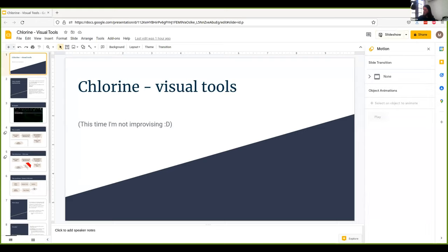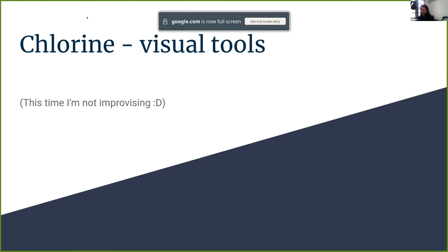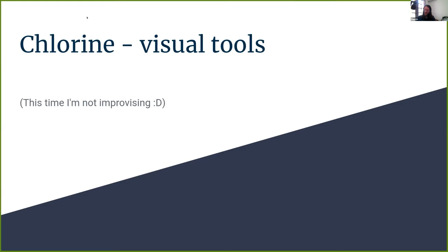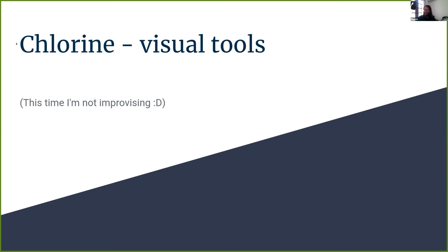So this time I'm not improvising. I am doing a slideshow because otherwise things would be weird, because I'm doing some work in Chlorine right now. So very simple explanation of what Chlorine is: it's a plugin to evaluate Clojure-star — and I'm using Clojure-star here to mean Clojure, ClojureScript, Babashka, Clojure CLR, Lumo, Plank, and I don't know what more.